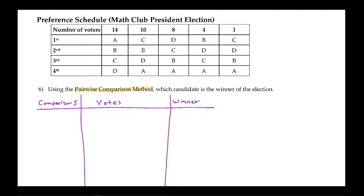The first step is to determine all of the head-to-head matches or comparisons between the candidates. One useful way of figuring out all the different comparisons is to draw a little map. So for example, we can compare Anna to Bob, Anna to Cora, and Anna to Dan. So the first comparisons would be A versus B, A versus C, and A versus D.